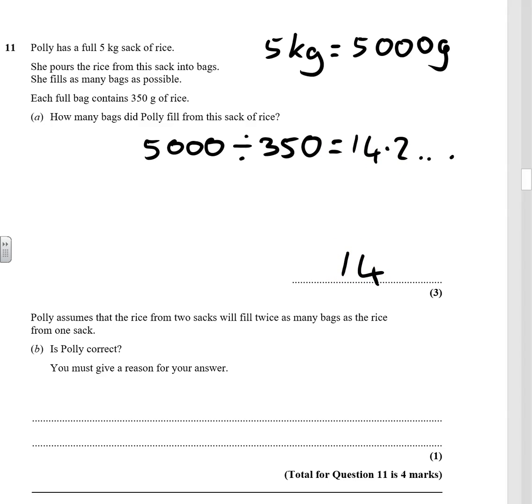Now, Polly assumes that the rice from two sacks will fill twice as many bags. Well, yes, because if we had, we'd have 10,000 here. So yes, she could fill 28. And if you want, you can show that you would do 10,000 divided by 350. She'd get 28 bags.